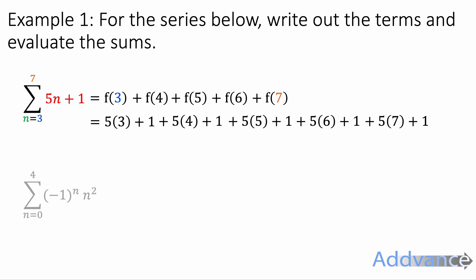And now we can work it out. So 5 times 3 plus 1 is 16. 5 times 4 plus 1 is 21. We're going to continue substituting them in and working out each of the terms.